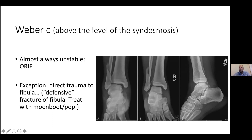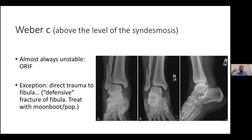Remember not to be caught out by what I call the defensive fracture of the distal fibula — we see this when someone comes in from soccer, a tackle from the side, and the fibula just snaps at the contact spot. This is almost like direct trauma on the fibula. These are not Weber C — treat them with a below-knee POP or moon boot if available, and they do very well. Weber C is where the joint is usually involved and the whole joint space opens up.